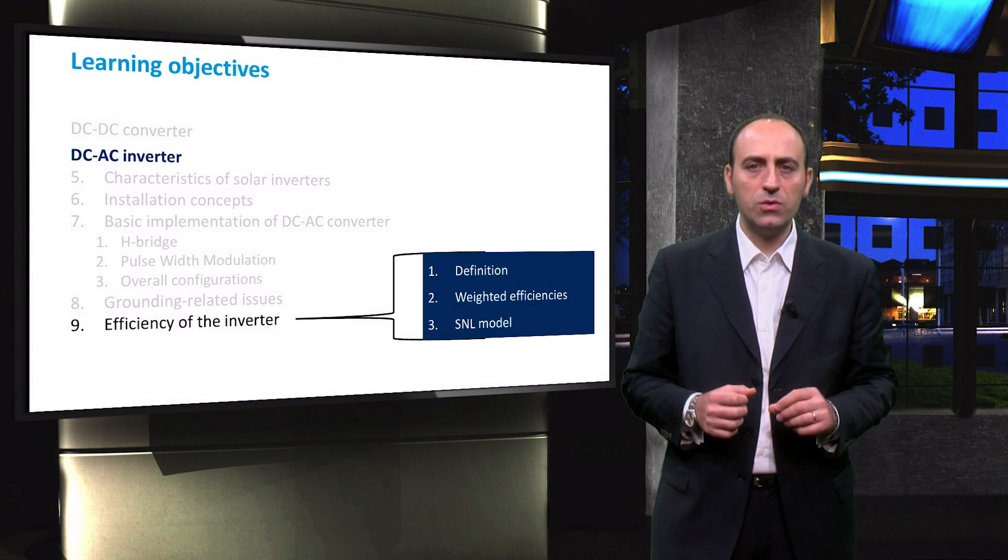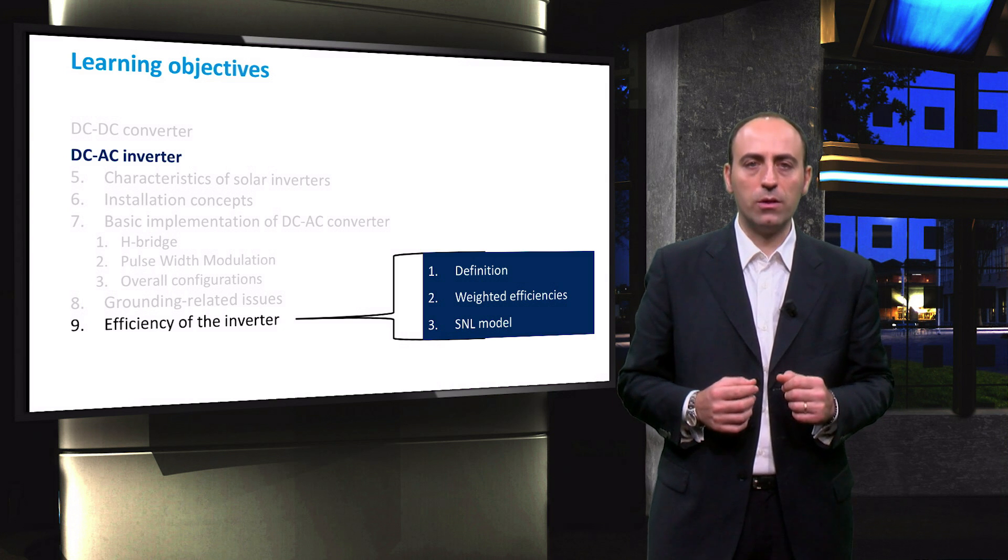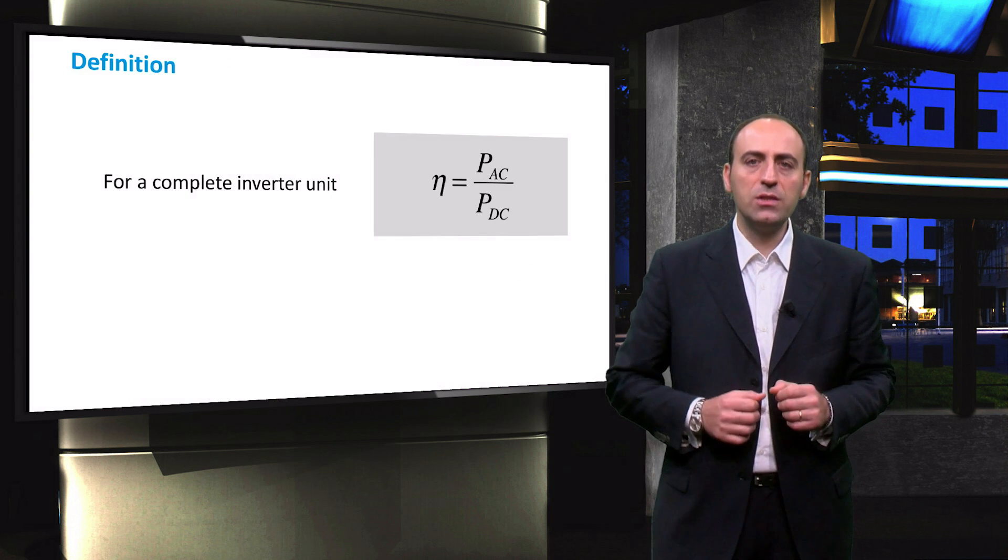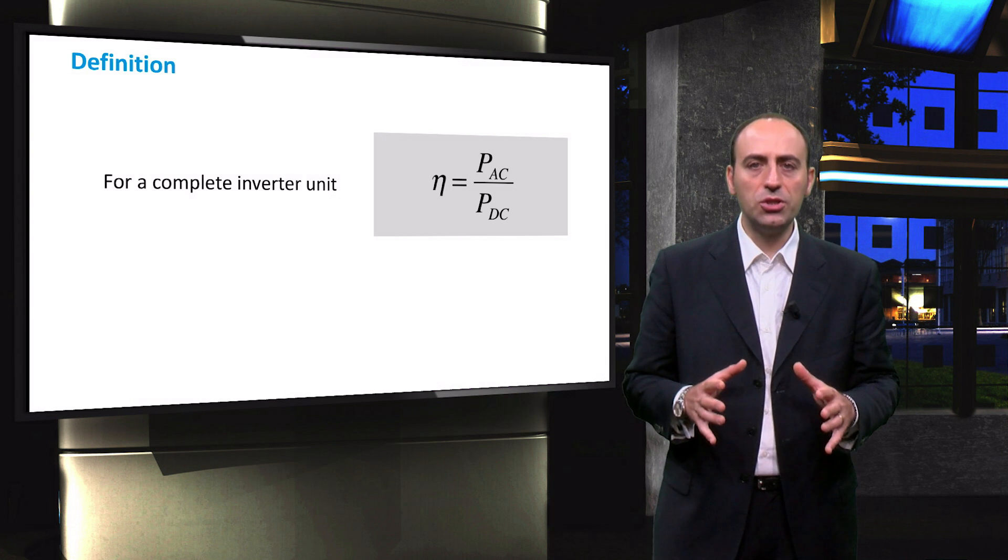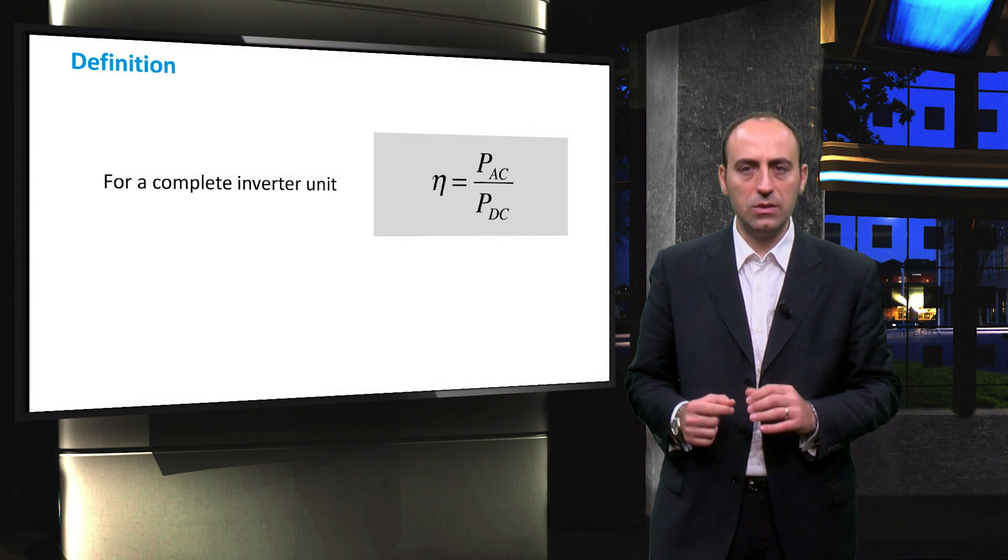As we will be able to see, these models are the weighted efficiencies models and the Sandia National Laboratories or SNL model. The efficiency of the inverter is defined as the ratio between the power output at the AC side and the power input at the DC side.